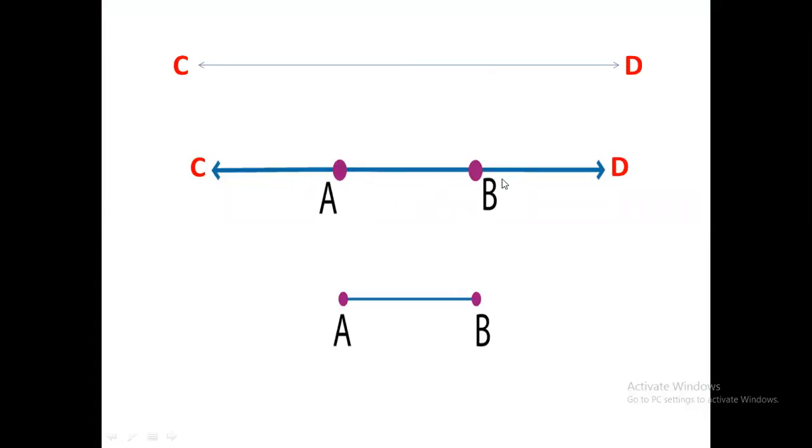Look at this. We have cut this part from CD. CD was a line. I have cut AB and I have put it here separately. So AB is a line segment. Means part of the line CD. The line CD is cut and we got a part AB from out of this line. So AB is a line segment now. I think it's clear to you.